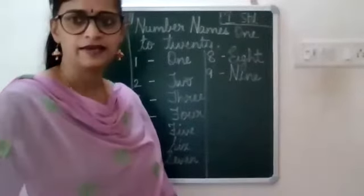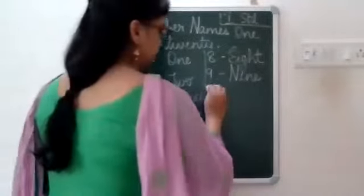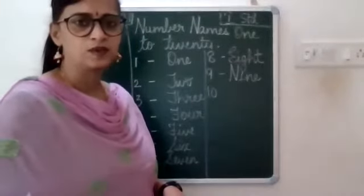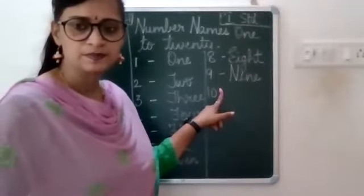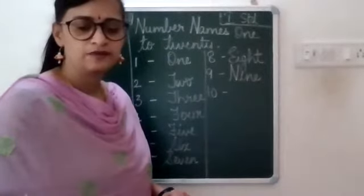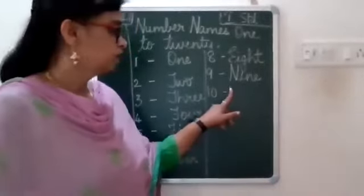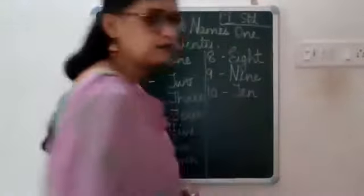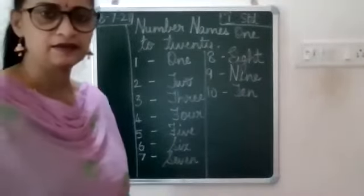Then again leave one line, write 10. Leave one finger space, put a small dash, leave a finger space, then write capital T-E-N, 10.